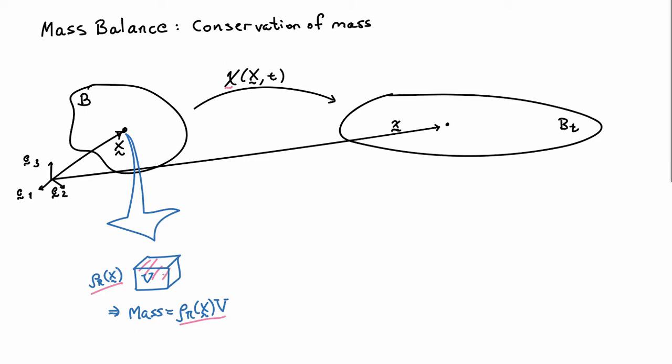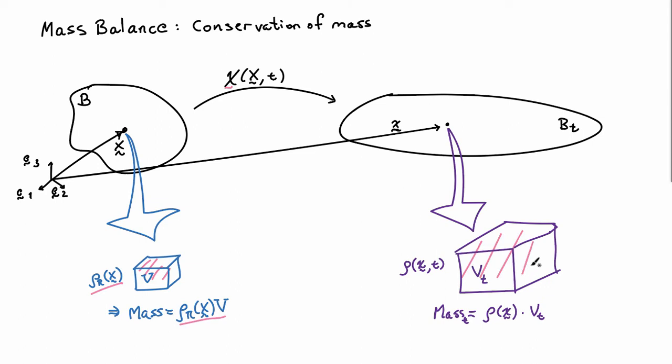I can do something relatively similar around the deformed location little x. And if I look at the exact same material points, they may occupy a new volume. I'll call that volume VT. And the density of the material here, I'll call ρ. And so, ρ depends on where I'm looking, so little x, and it can be a function of time if I have a time-varying deformation.